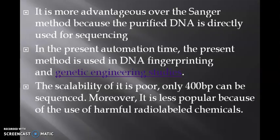So the Maxam-Gilbert method is more accurate than Sanger sequencing. It is best suitable for DNA binding and DNA structural studies. In this present automation time, this method is still used in genetic engineering studies.